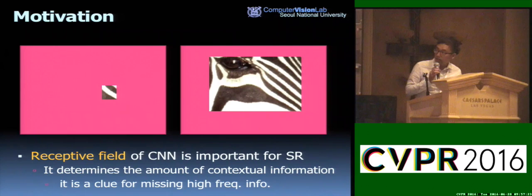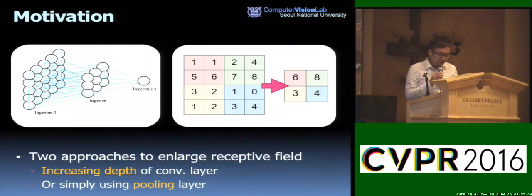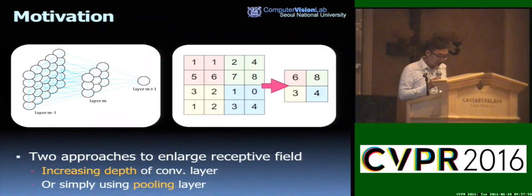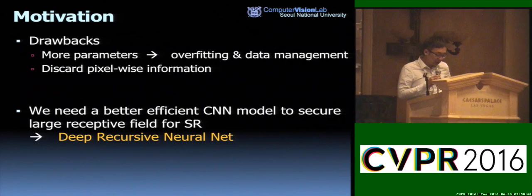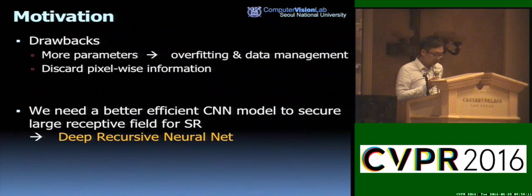As you can see in these figures, with a large size of context, we may figure out what it is more clearly. Among many approaches to widen the receptive field, increasing the network depth is one promising way. A convolutional layer with filter size larger than 1x1 or a pooling layer that reduces the dimension of intermediate representation can widen the receptive field. But both approaches have drawbacks: a convolutional layer introduces more parameters, and a pooling layer typically discards some pixel information. So we need a better and more efficient way to secure a large receptive field for super-resolution.